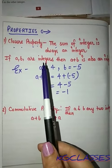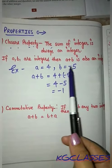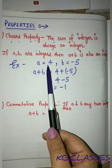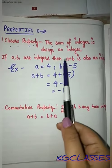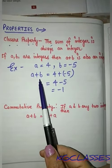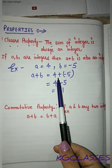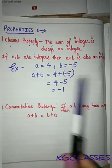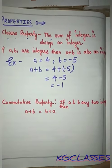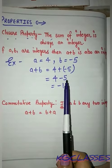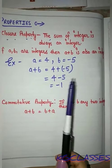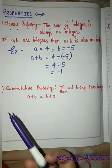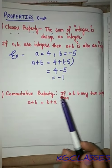If a and b are integers, then a plus b is also an integer. Here is an example: if the first integer is 4 and the second integer is minus 5, then a plus b will be 4 plus minus 5. Since plus and minus gives minus, it will be minus 1, and minus 1 is an integer. So this property is satisfied.